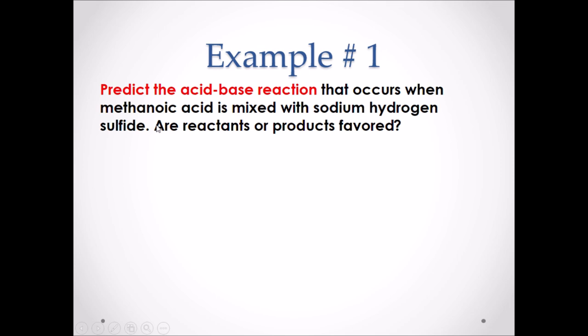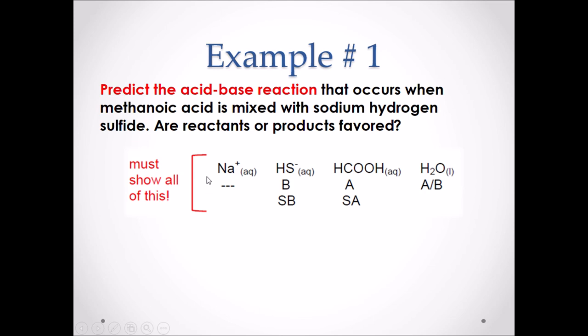Example number one: predict the acid-base reaction that occurs when methanoic acid is mixed with sodium hydrogen sulfide. Are the reactants or products favored? Step number one — list all of the species available to react. Methanoic acid is a weak acid, so we list it as it appears: HCOOH. Sodium hydrogen sulfide is an ionic compound, so we dissociate it and list its ions: Na+ and HS-. We also always have water available as a species.